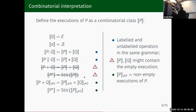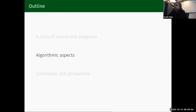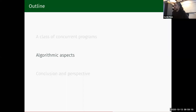Now I'm done and I've specified in an automatic way the executions of the program. Having this combinatorial specification means I can use a lot of tools from combinatorics to solve my two questions: counting the number of executions of a program and sampling among them.